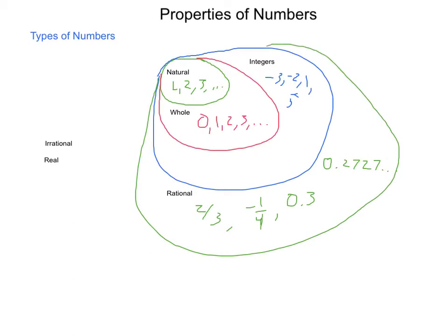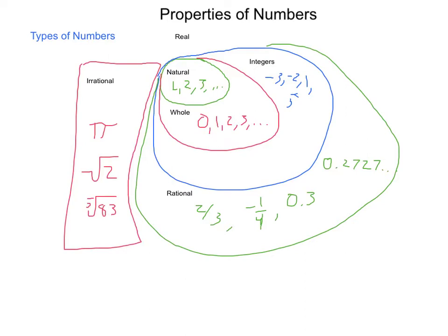Outside of this set is another set of numbers that cannot be written as a fraction. Numbers, some of which you've been exposed to, like pi, which is an infinite, non-repeating decimal. The square root of 2, the 5th root of 83. Anything that cannot be simplified down into a ratio of two integers is considered irrational. And this set of numbers is not included in our portion of the remainder of everything we've spoken of.